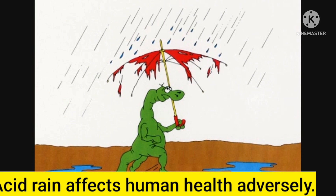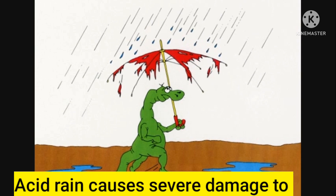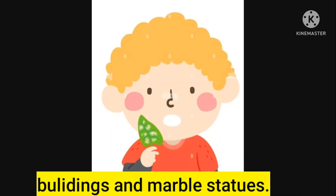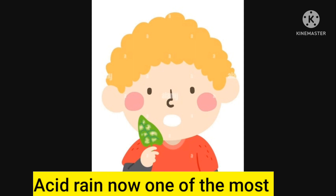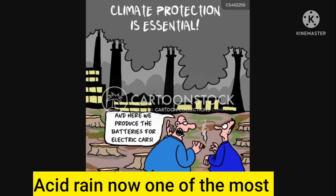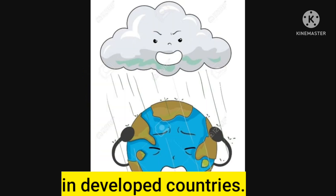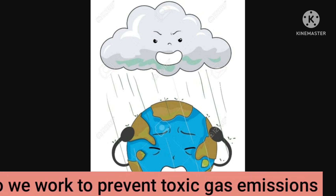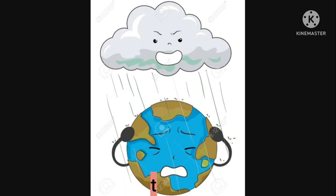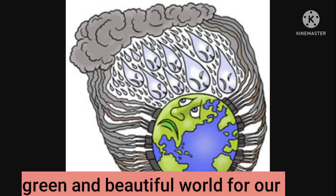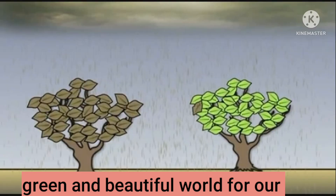Acid rain affects human health adversely. Acid rain causes severe damage to buildings and marble statues. Acid rain is now one of the most serious environmental problems in developed countries. So we must work to prevent toxic gas emissions into the atmosphere, and we must build a green and beautiful world for our future generations.